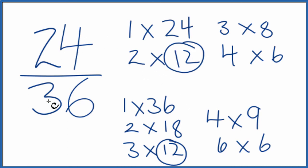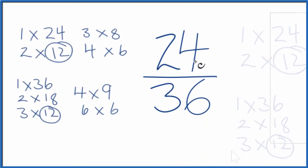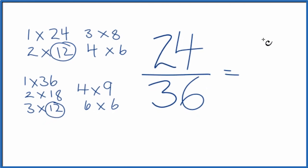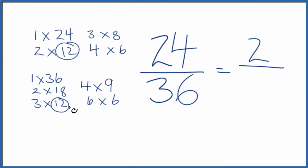So we'll divide 24 by 12 and 36 by 12, and we'll have simplified 24 over 36. Let's move this over here. So 24 divided by 12, that gives us two, and then 36 divided by 12 gives us three.